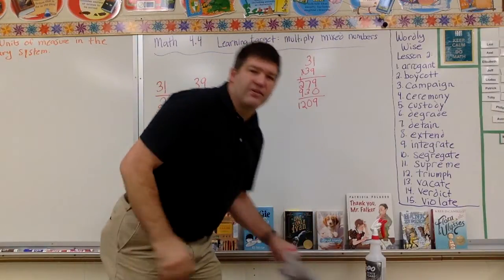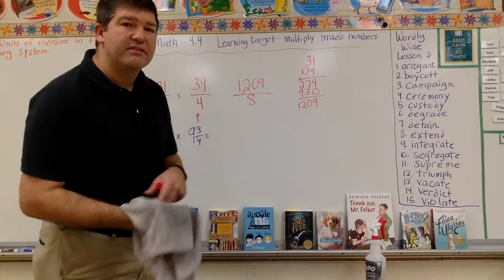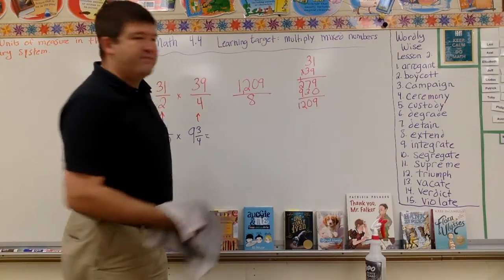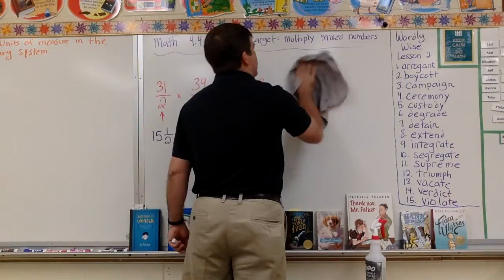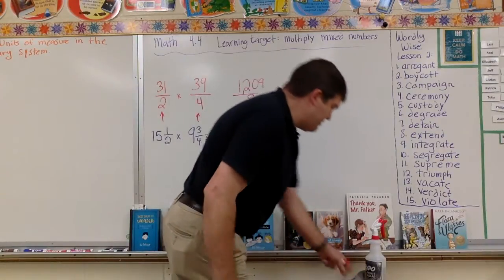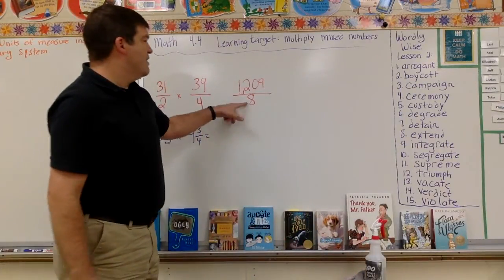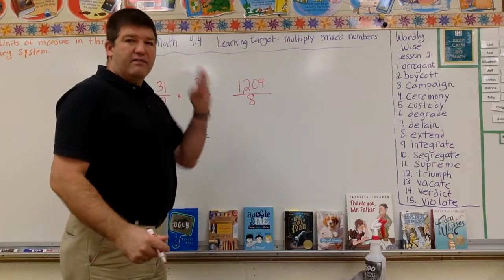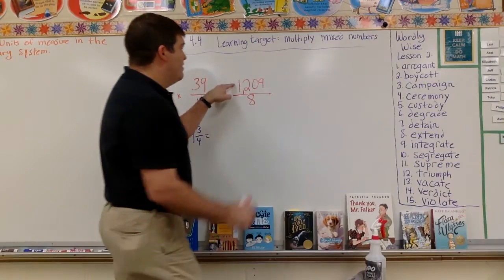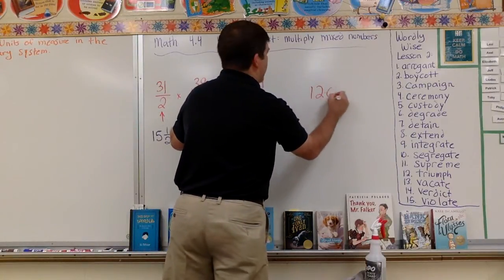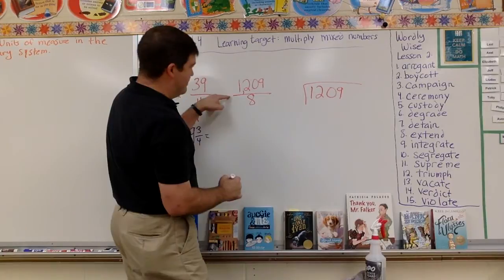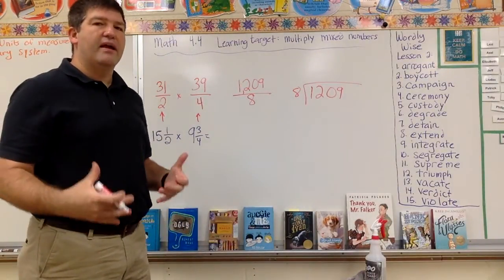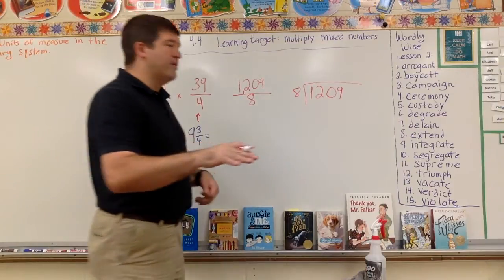So my answer, which is not my final answer, but it's an answer. One thousand, two hundred and nine over eight. At this point, instead of asking how many eights go into here, I'm going to divide this out. This line means divided by. So if I say it in my head, one thousand, two hundred and nine divided by, this line here, eight. And I'm going to see how many I get to make this into a mixed fraction.